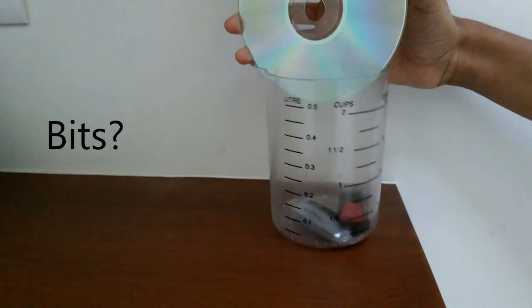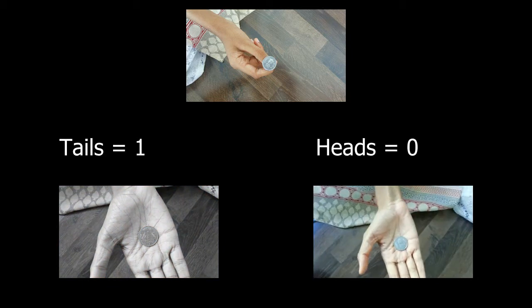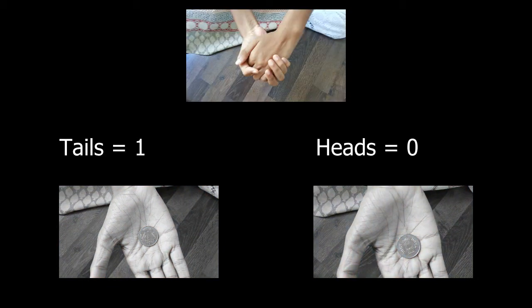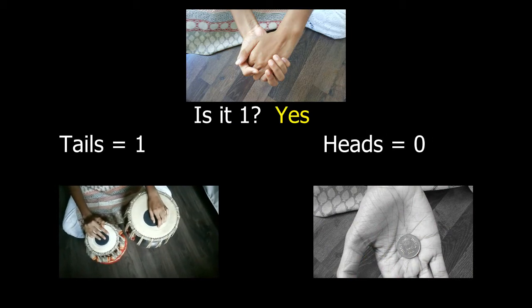Bits? What does that mean? Suppose I flip a coin and you want to know whether I got tails, that is 1, or heads. We'll call it 0. To get your information, you need to ask only one question. Is it 1? If the answer is yes, you hear,